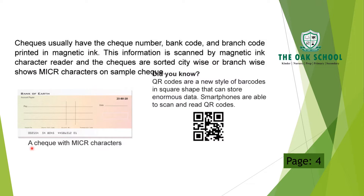So you can see on the bank check that the check number, bank code, and branch code are written in magnetic ink. This information is scanned by the magnetic ink character reader and the checks are then sorted city-wise or branch-wise.